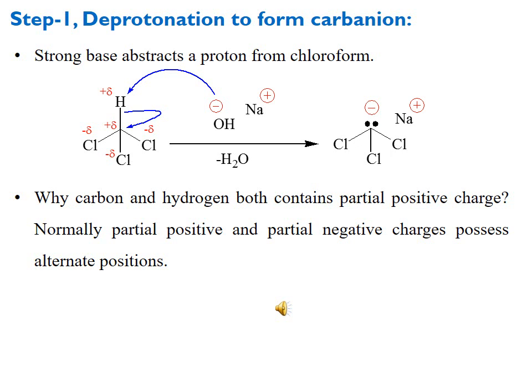Step one of the original mechanism is the deprotonation of chloroform by a strong base to form a carbanion. Chloroform has only one proton. The hydroxide acts as a base and attacks the partially positive hydrogen; the two electrons of the C–H sigma bond move toward carbon, generating a lone pair with negative charge on carbon — a trichloromethyl carbanion balanced by sodium. The byproduct is water.